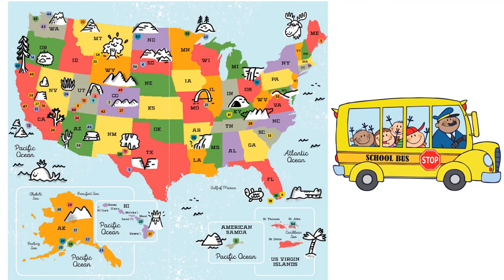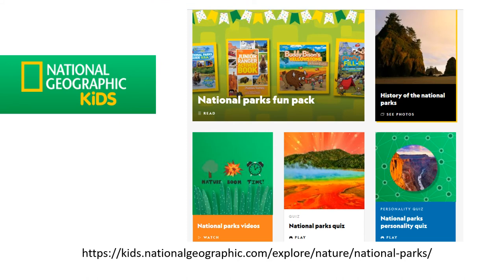That's the end of our field trip. I wish we could have gone to all 62 national parks, but there just wouldn't be time. You can learn more about the national parks on your own. One great website to go to is National Geographic Kids — you see that website at the bottom. It has many different areas to explore, including quizzes and videos to watch. If you can't remember the whole website, just Google National Geographic Kids and in the search bar type in National Parks.